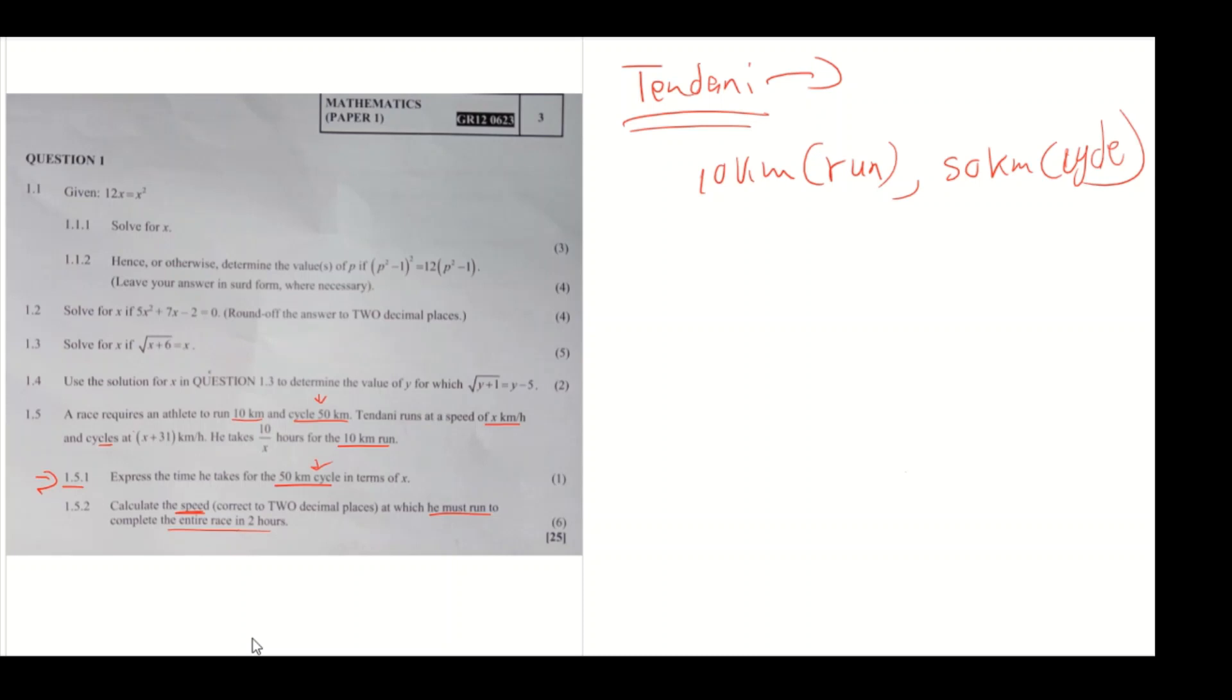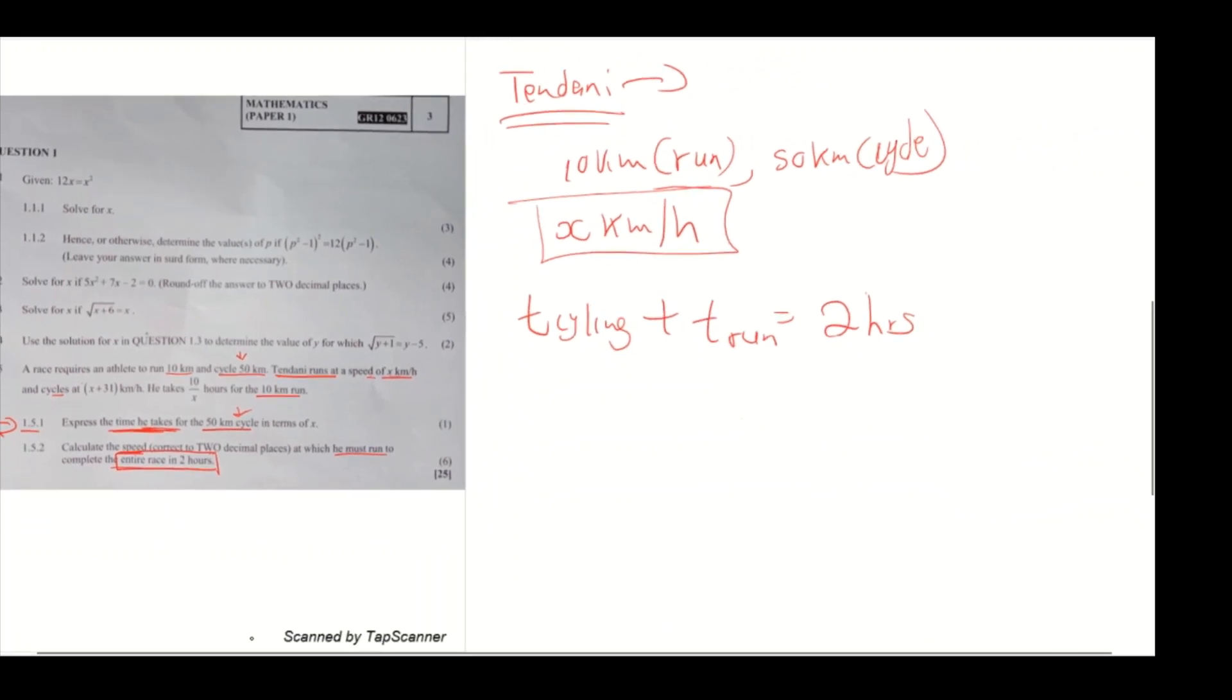One important thing is we are focusing on the time. We are asked to find the speed. Tendani runs at a speed of x kilometers per hour, so we need to find this x. We are told the entire race is two hours. The time for cycling plus the time for running should give you the entire time, which is two hours.